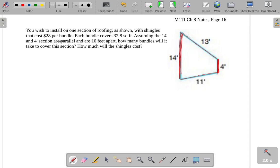If we're trying to figure out how many shingles this particular section of roof would cost, then really we're talking about the total amount of space that this trapezoid has. In other words, we're talking about its area.